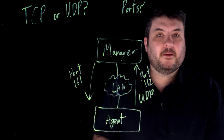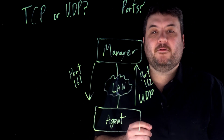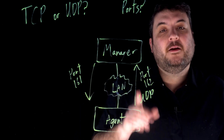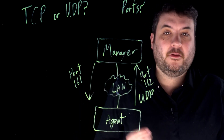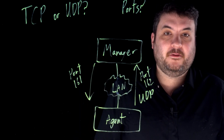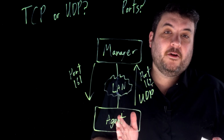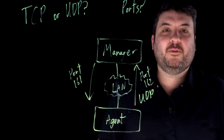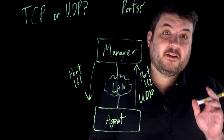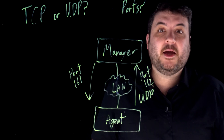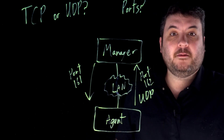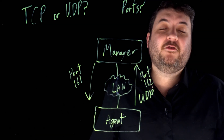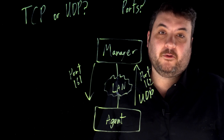SNMP primarily communicates via UDP, and you're usually talking by default about ports 161 and 162, although you may see some differences. I really hope this video helped you get your bearings with SNMP. If you did like the video, please click the like button and subscribe to the channel so you can get more videos like this one. And until next time, I wish you excellent network reliability.